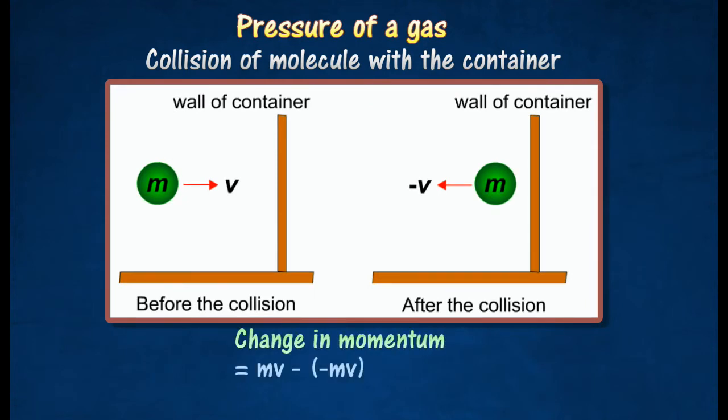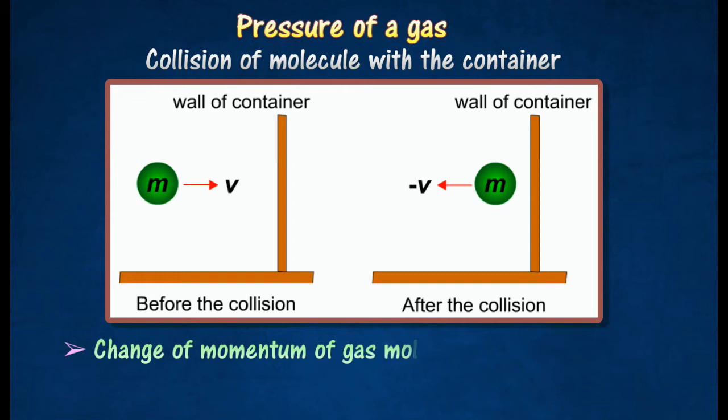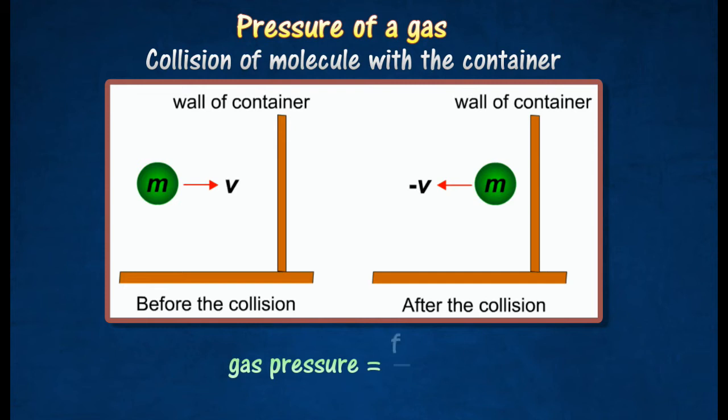The change of momentum of gas molecule is equal to 2mv. According to Newton's second law of motion, the rate of change of momentum produced by the collisions between the gas molecules and the walls of the containers results in a force which acts on the walls of the containers. The force per unit area on the wall is known as gas pressure.